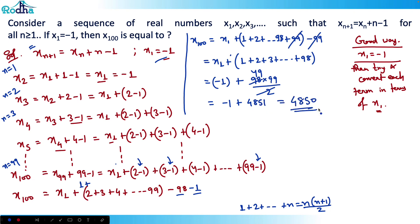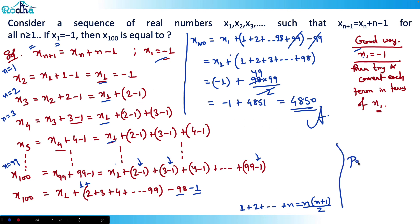So the answer is 4850. The key to solving such questions: when one value is given, convert all terms into that value. Write each term in terms of x1, then look for a pattern — don't solve numerically right away. Finding the pattern is the most important step.